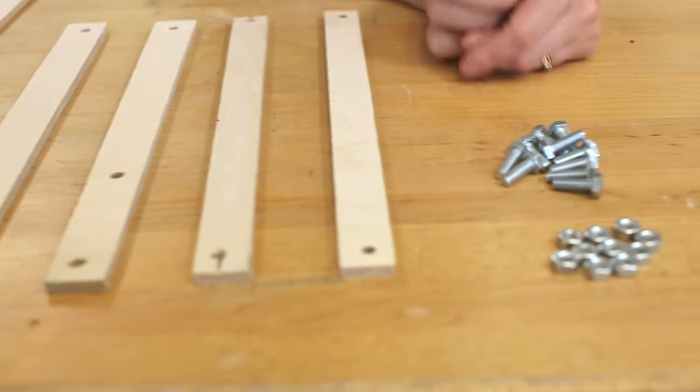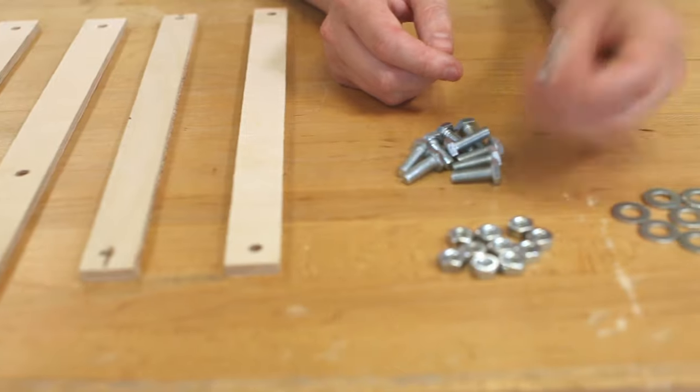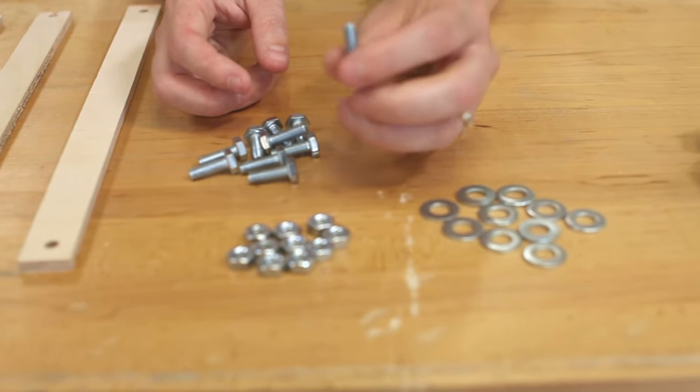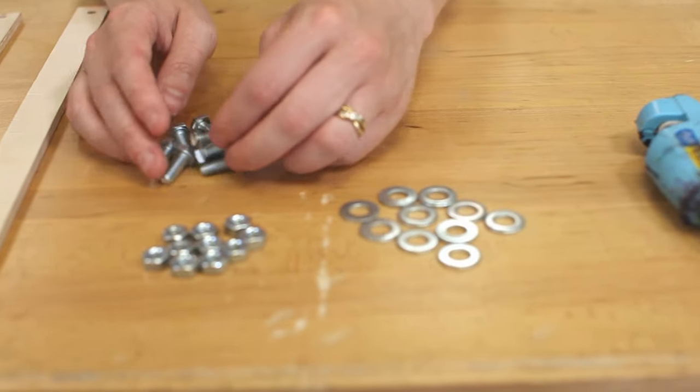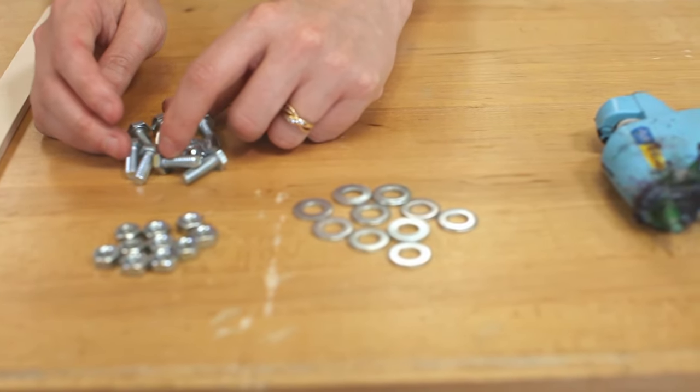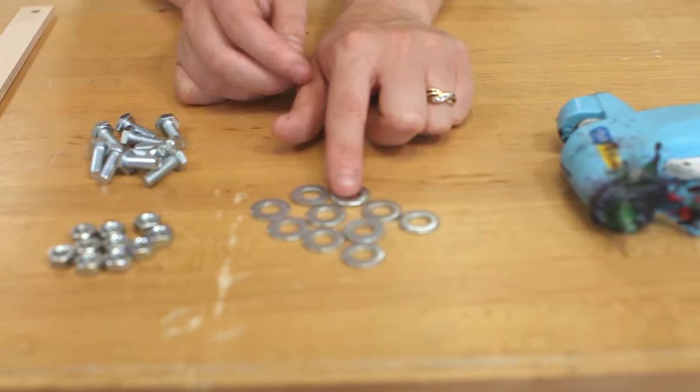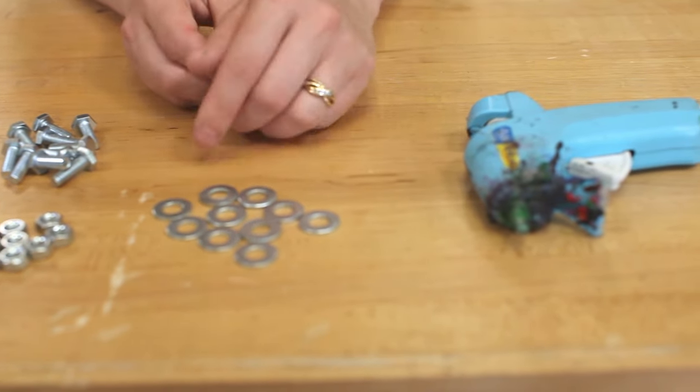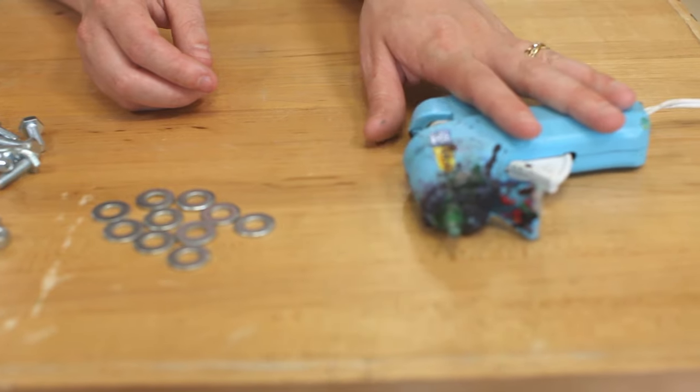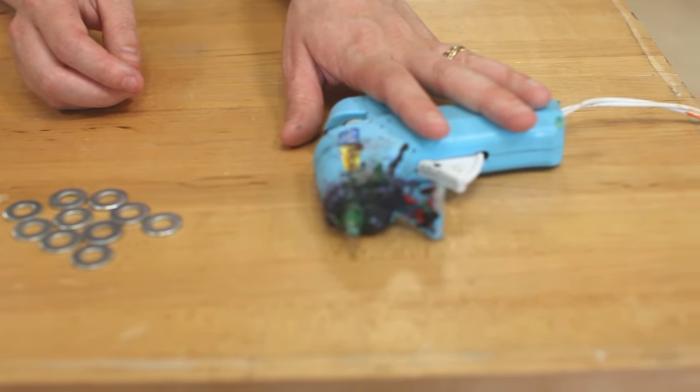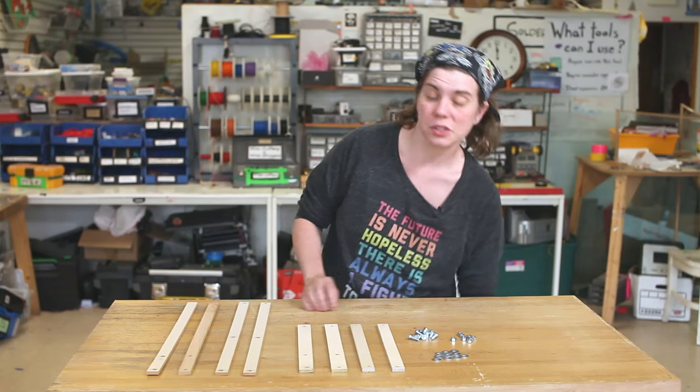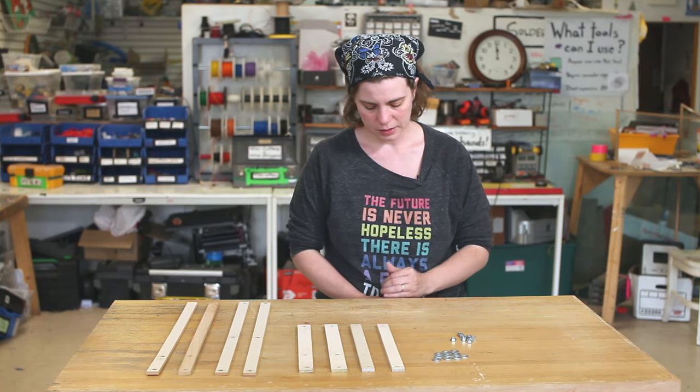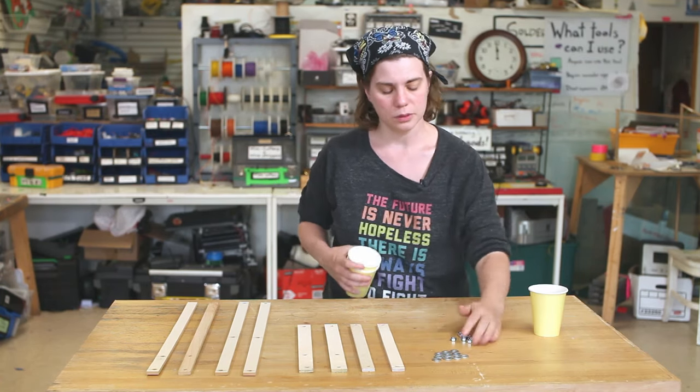The last thing that we have are these nuts and bolts. We're working with quarter inch bolts, three quarters of an inch long and a quarter inch wide. We've got bolts, nuts, and washers. These washers are a little bigger than what we typically use, but you can use any size as long as it fits over the bolt. The last thing we're going to use is some hot glue to hold it all together. One thing you can do is store your nuts and bolts in paper cups so you don't lose track of them.